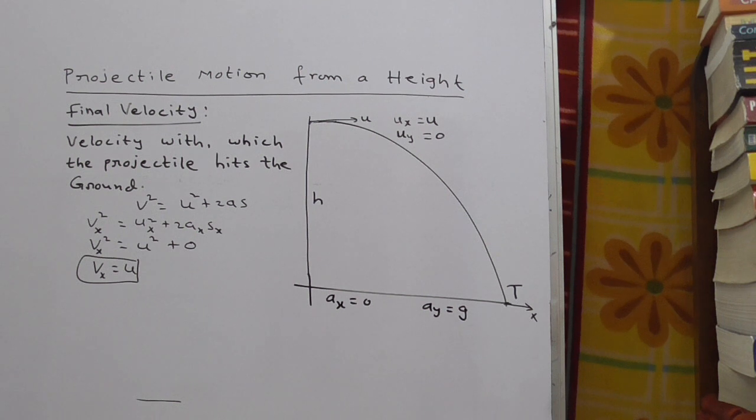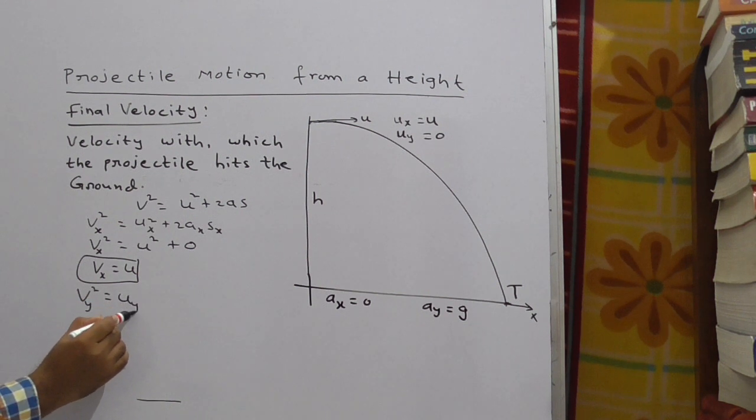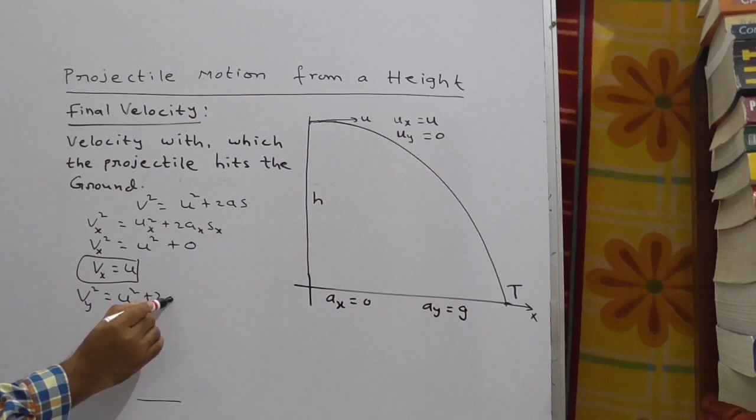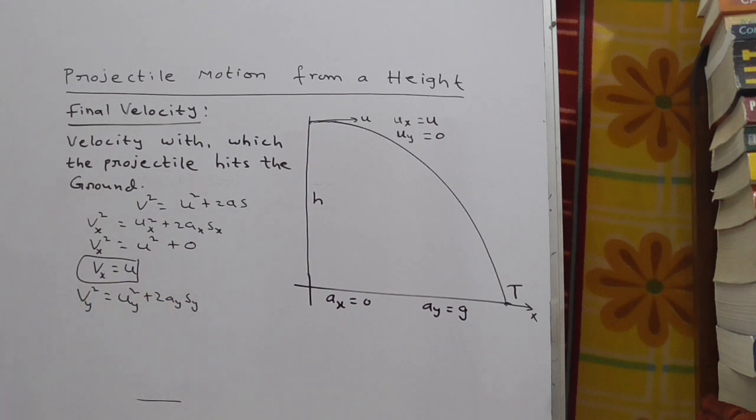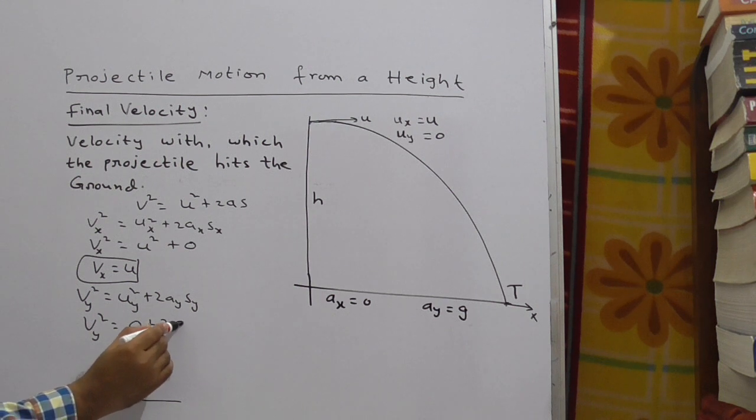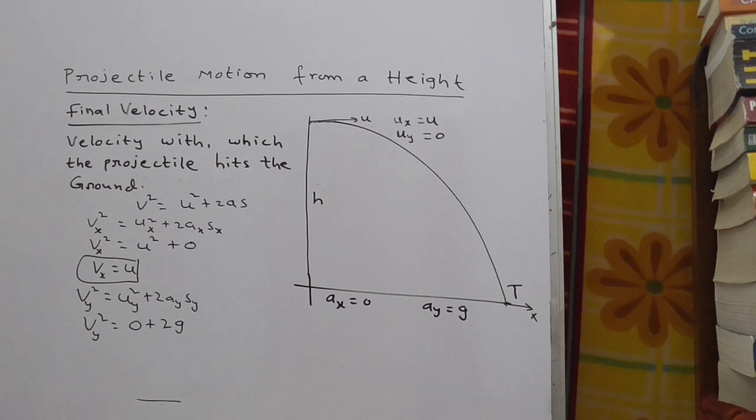Now consider with respect to y. So that is v_y² = u_y² + 2a_y·s_y. Now substitute the values v_y² equals u_y², u_y value zero plus 2a_y is g, s_y is nothing but h.